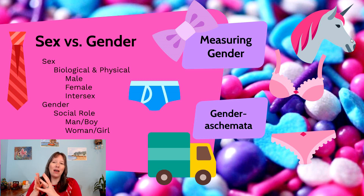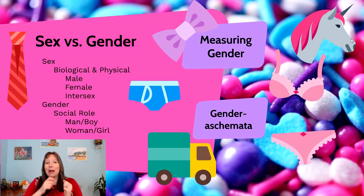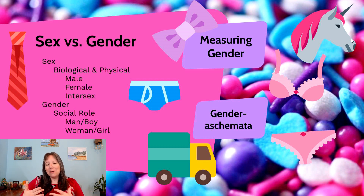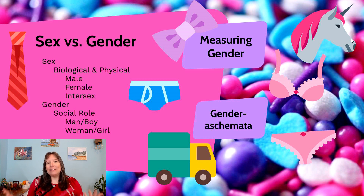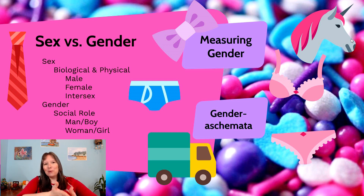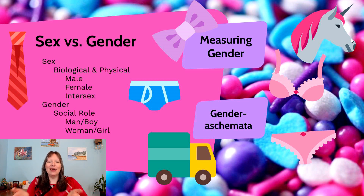A female pharaoh of Egypt perhaps wore a beard and the headpiece associated with the male pharaoh, and a female pope would present themselves as a masculine pope. So the difference between biological sex and gender really deals more with what roles you perceive yourself with in the world.